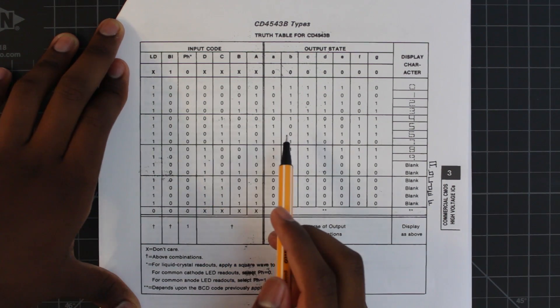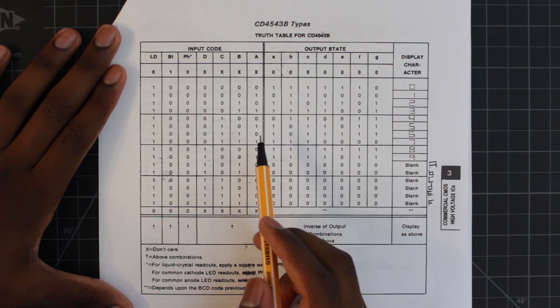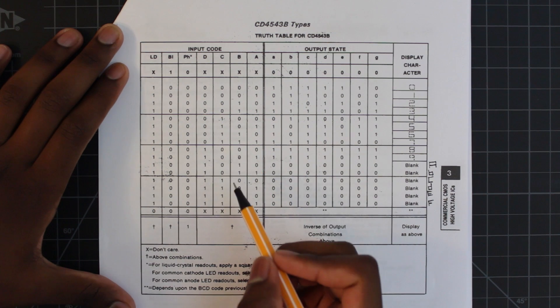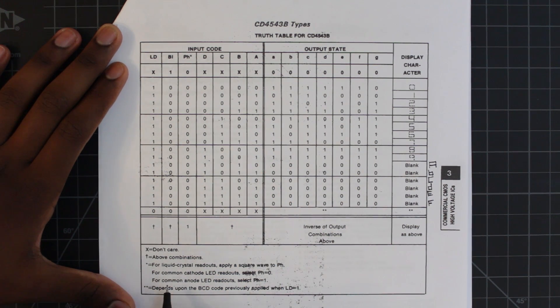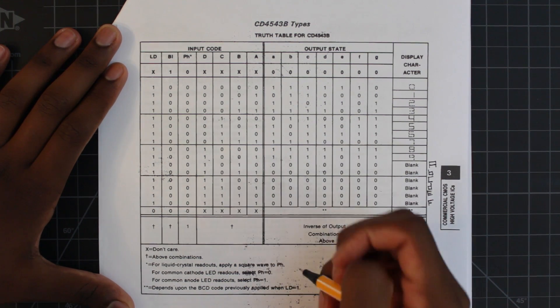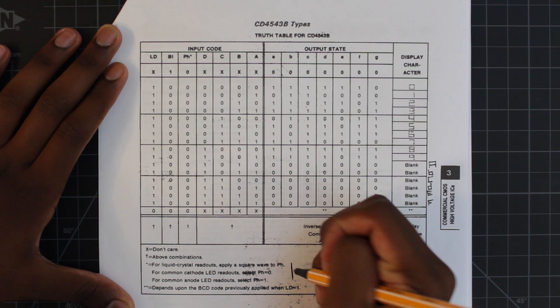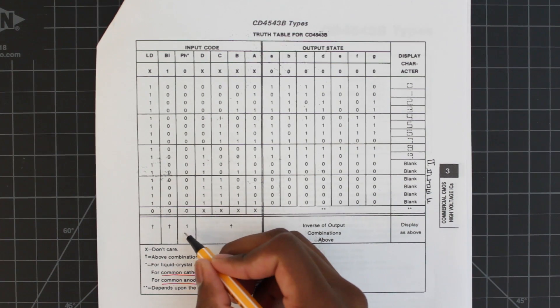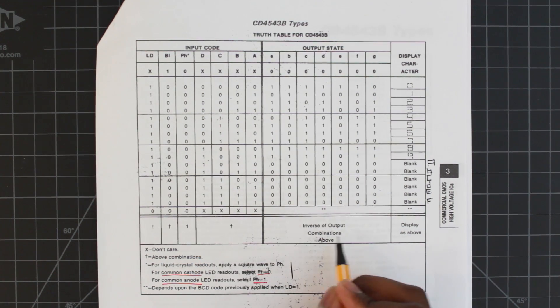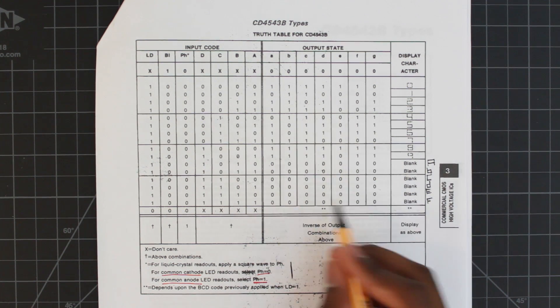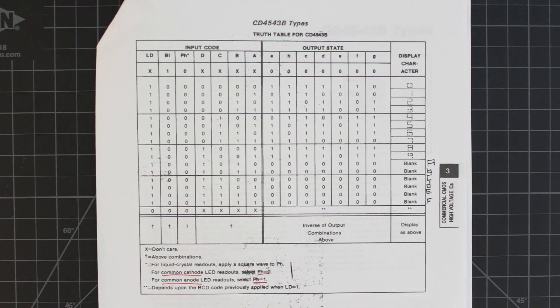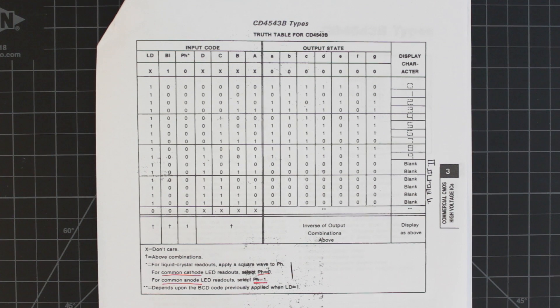Let me know in the comments if you know of a chip that could work. You can see here at the bottom, it says for common cathode LEDs, pH should be 0, which is pin 6. Then for common anode, pH should be equal to 1. And on the truth table, you can see that all the given outputs are for pH equals 0, but at the bottom, it says for pH equals 1, simply inverse the above outputs, which means this IC is compatible with both.